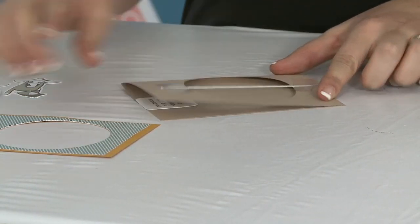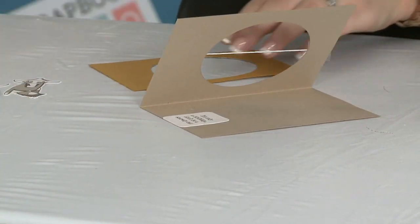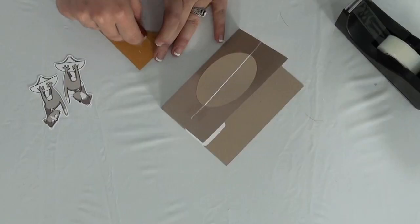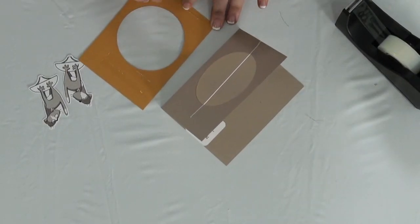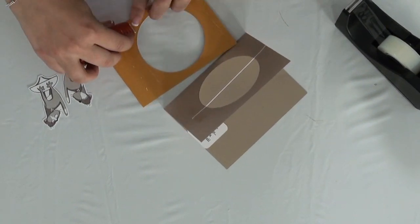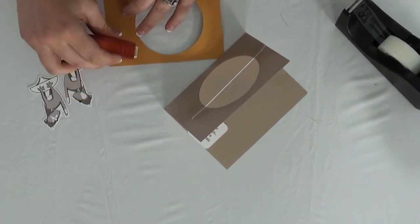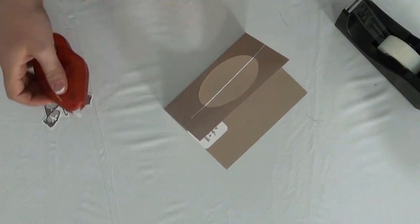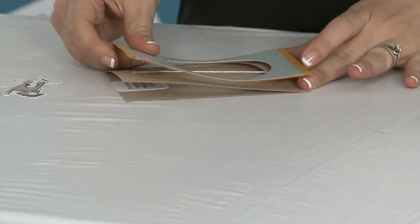So once you have your string on, you want to go ahead and put your base over the top. So it just covers up that string. And I'm using a Tombow Extreme Runner. I like to have a really strong adhesive to hold this down.